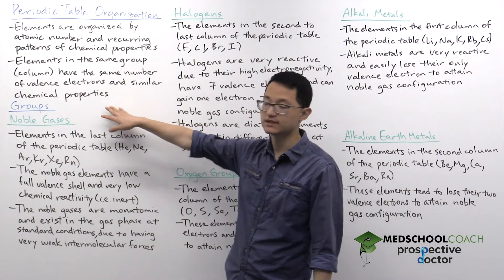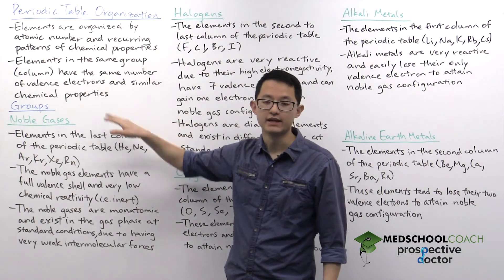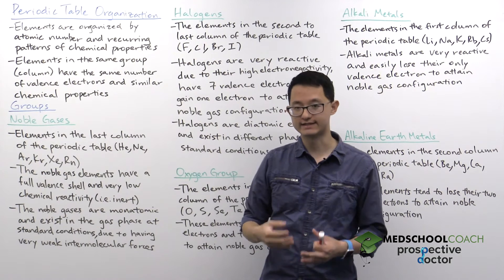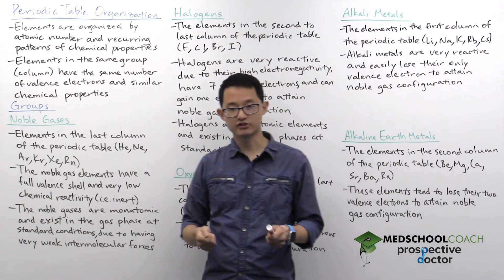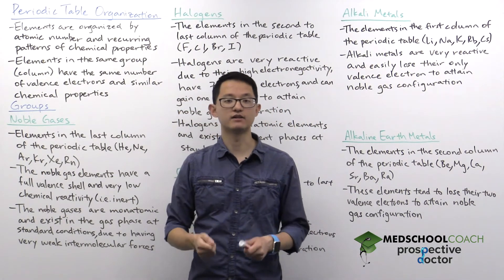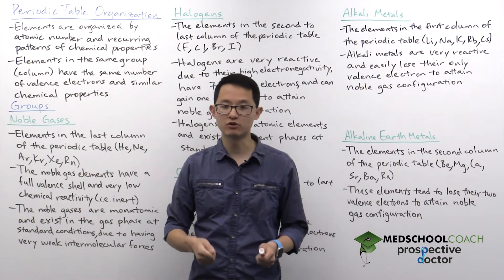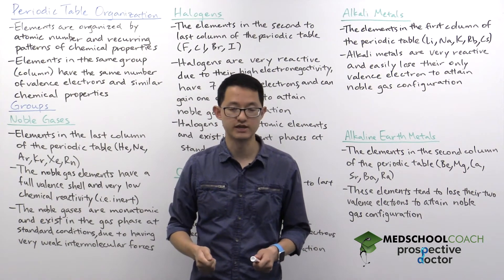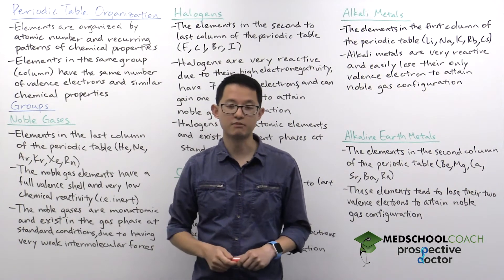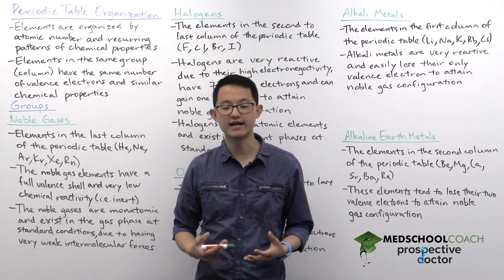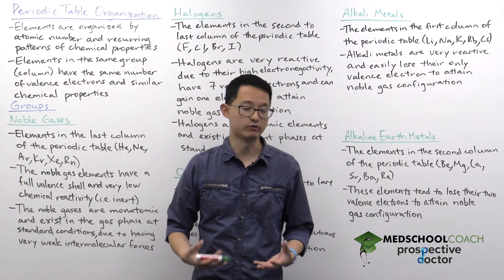That's because elements in the same column or group, they have the same number of valence electrons. And valence electrons are very important because they're the electrons that participate in chemical bonds and chemical reactions. So these elements have the same number of valence electrons, then they will tend to have the same chemical reactivity.